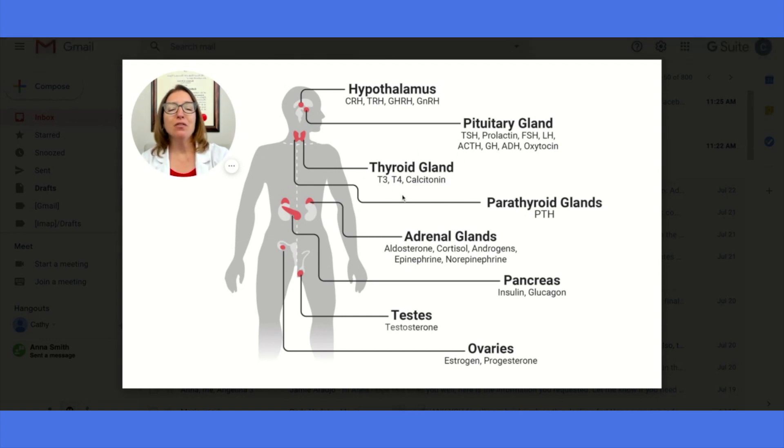Okay. Moving on to the thyroid gland in the neck. The thyroid gland produces T3, which is triiodothyronine, T4, which is thyroxine, and calcitonin. So from now on, I'm going to refer to those as T3 and T4, so I don't have to try to pronounce triiodothyronine anymore.